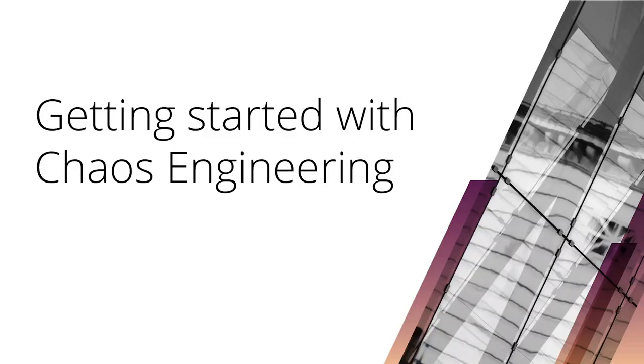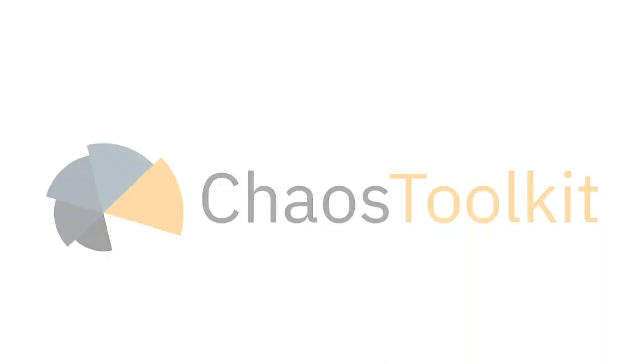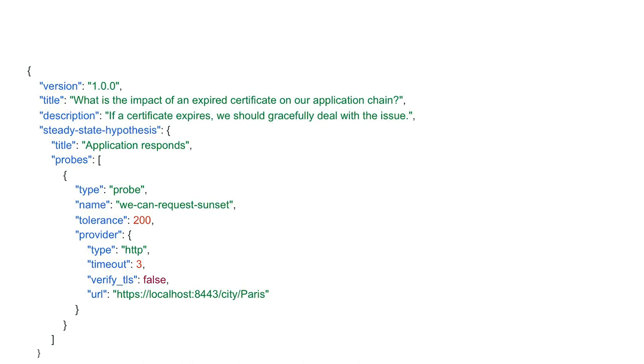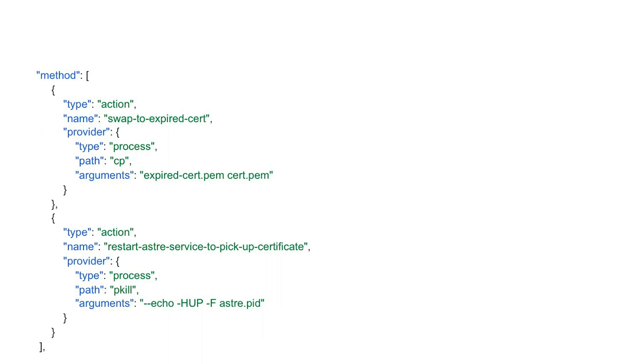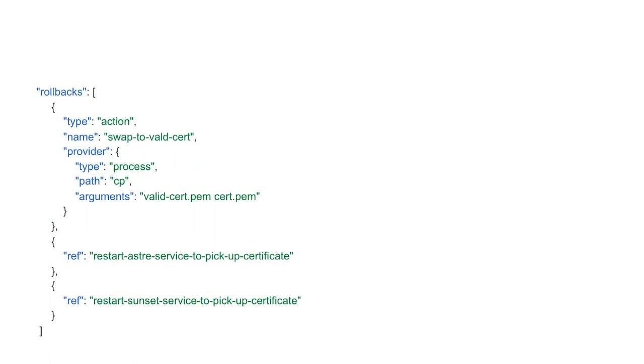How would you actually get started with chaos engineering? Chaos Toolkit is one approach. Full disclosure, I do know one of the guys who started this project. It's a way of codifying these experiments, these chaos experiments, all within one framework. You can define these in JSON form. First of all, you've got your steady state hypothesis—what does it mean for your application to be working? In this case, it's just saying this particular application will respond with a 200. Nice and simple. Then you can define your chaos variable—how are you going to break it? Here you're just swapping out an expired certificate. This is a failure that's going to happen to you at some point—it's happened to me many times. It also conveniently allows you to define your rollback, how you undo that damage.